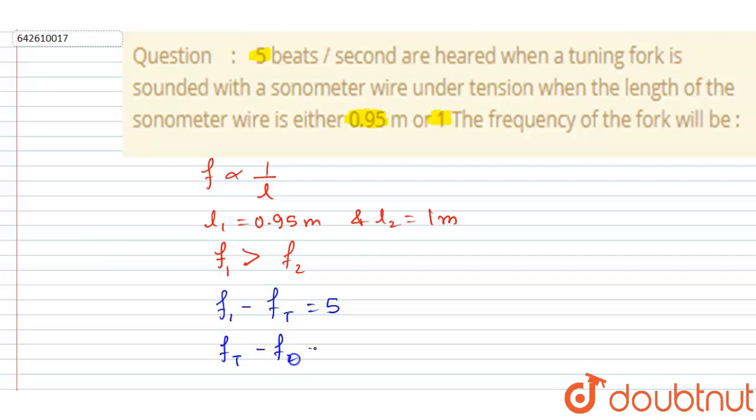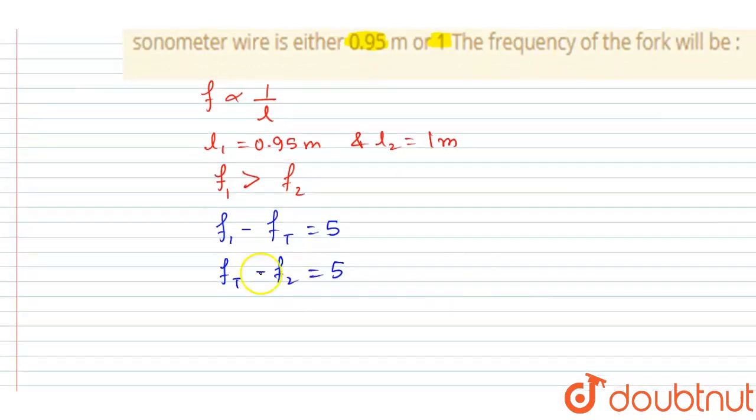So if I add the two equations, I will get f1 minus f2 equals 10. So we got this relation that f1 minus f2 equals 10.